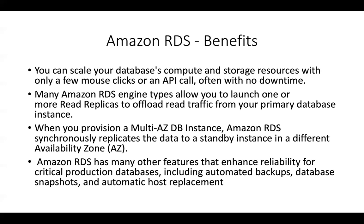The high-availability configuration is called Multi-AZ, which uses synchronous replication — whereas read replicas use asynchronous replication. With synchronous replication, a transaction is not committed until it is written to the standby database. With asynchronous replication, data is written to the primary first, then replicated to the read replica. With Multi-AZ, you get a standby database in a different availability zone, and AWS handles the CNAME switching between primary and standby automatically.